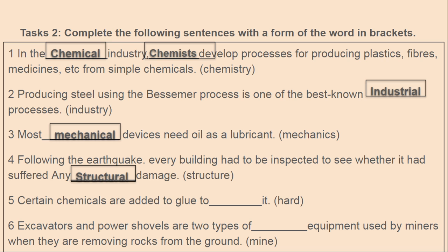Sentence five: certain chemicals are added to glue to blank it. Answer: certain chemicals are added to glue to harden it. Last sentence: excavators and power shovels are two types of blank equipment used by miners when they are removing rocks from the ground. Answer: mining equipment.